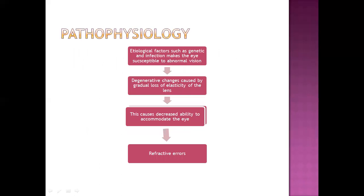Pathophysiology: any etiological factors that make the eye susceptible to refractive error cause degenerative changes through gradual loss of elasticity of the lens. As the eye loses elasticity of the lens, the shape changes, causing decreased ability to accommodate the eye. The muscles around the eye are unable to accommodate properly, resulting in refractive errors, blurred vision, difficulty focusing, and headache.